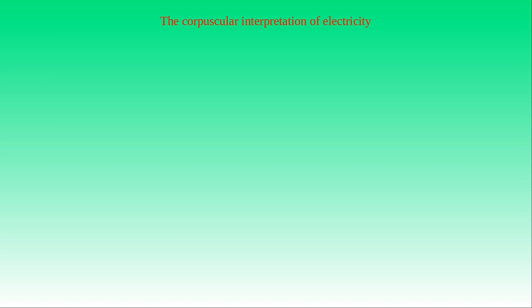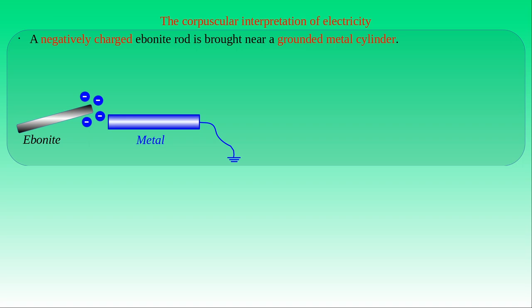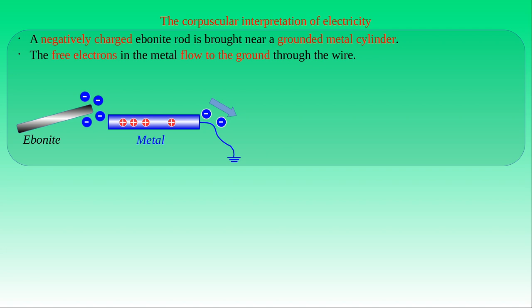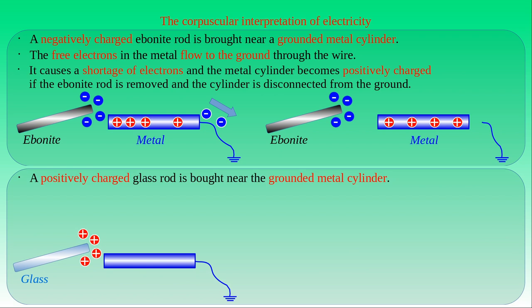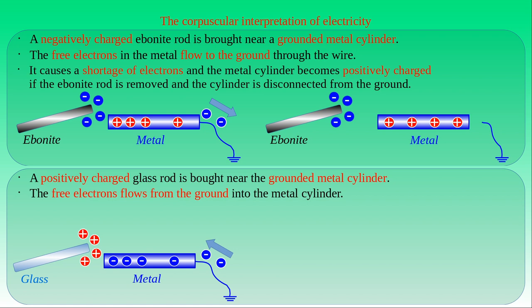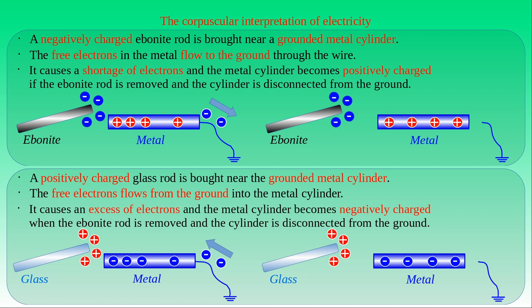The corpuscular interpretation also helps us to understand the transfer of charge from bodies to the ground. If we bring a negatively charged ebonite rod near a grounded metal cylinder, the negative charge on the rod repels the free electrons in the cylinder. These repelled electrons flow into the ground through the metal wire, resulting in a shortage of electrons in the metal cylinder, which becomes positively charged. If we remove the ebonite rod and disconnect the cylinder from the ground, the positive charge on the cylinder can be measured by an electroscope. Conversely, if a positively charged glass rod is brought near the grounded metal cylinder, the positive charge attracts free electrons into the cylinder from the ground, creating an excess of electrons, and the cylinder becomes negatively charged. Removing the glass rod and disconnecting the cylinder allows this negative charge to be measured by an electroscope.